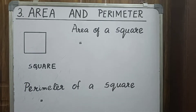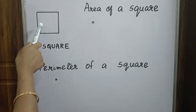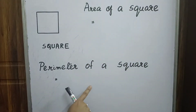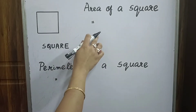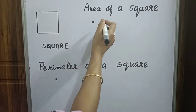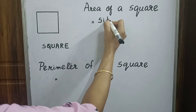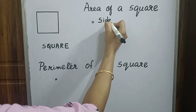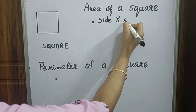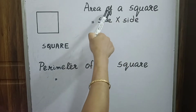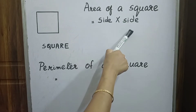So what is the area and perimeter of a square? Here we are going to find out the area of a square and the perimeter of a square. The formula for area of a square is: Area of a square equals side into side.